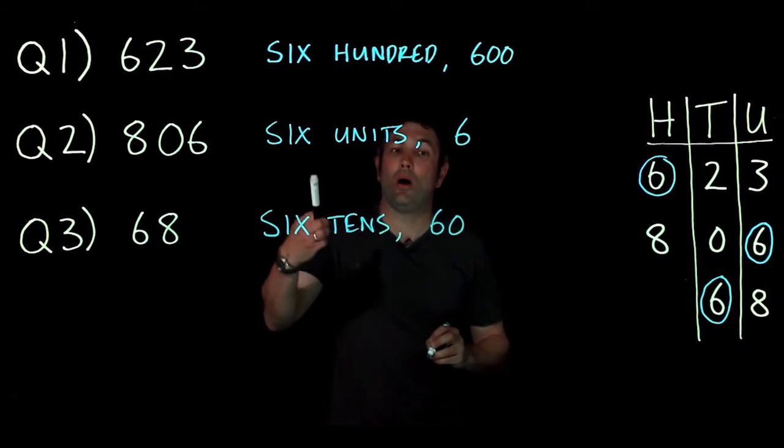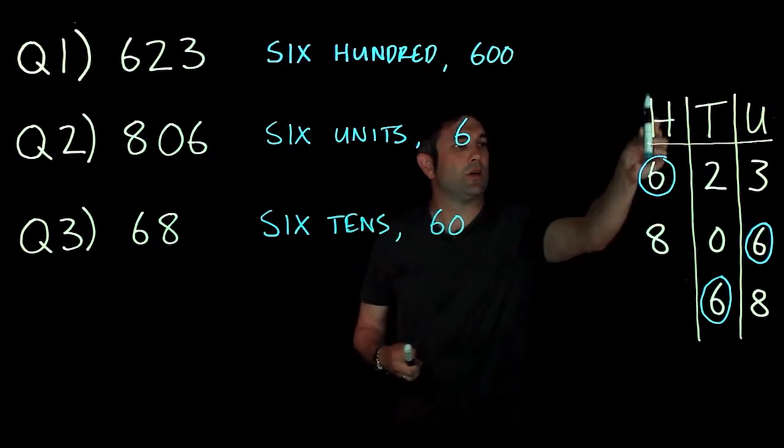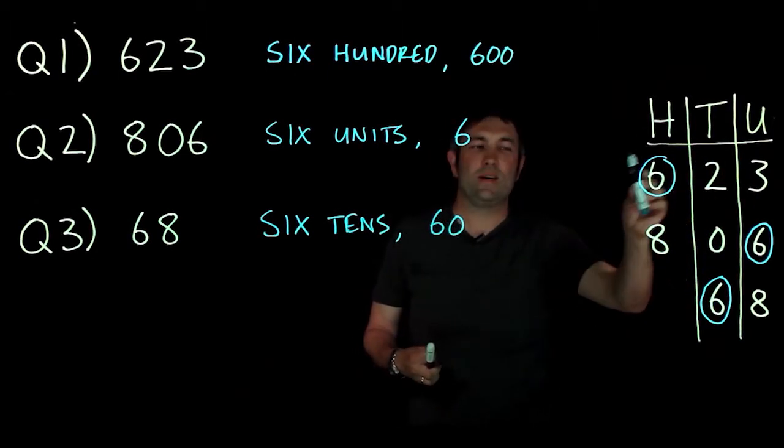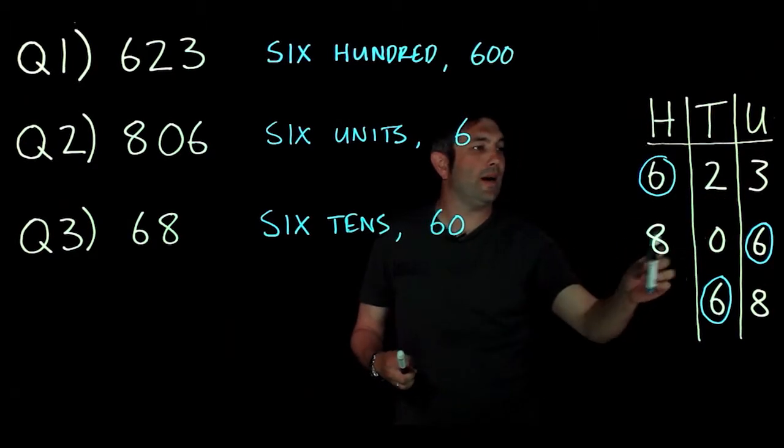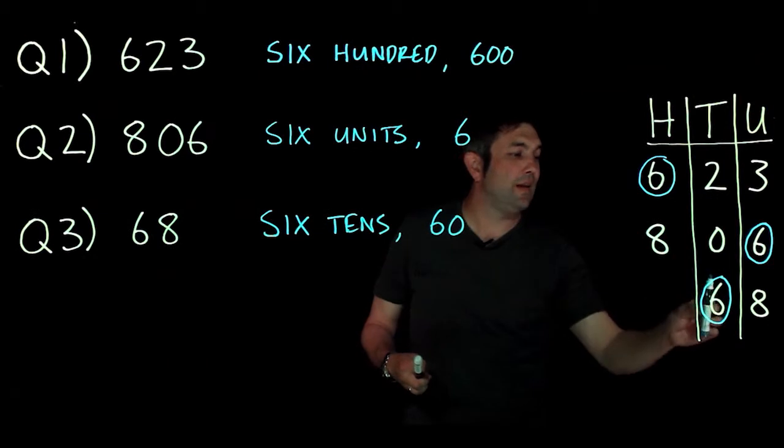Now when we're looking at these, we're looking at place value. Okay, so the six represents a different amount depending on where it is in the number. So this is 623, we're looking at 806 units, and we're looking at sixty, six tens and eight.